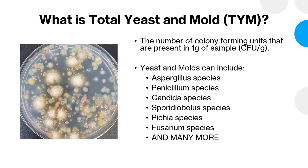Additionally, there are organisms that exist in cannabis that are known to be microbes which are viable but not culturable. This means that it is yeast and mold that cannot be grown easily in a controlled setting. However, the organism could exist in products and it could be dangerous depending on the characteristics of that microbe. If it's a pathogenic species, it can be dangerous, but we may not be able to grow it or culture it in a lab, which adds another layer of difficulty to measuring the true amount of total yeast and mold in a sample.